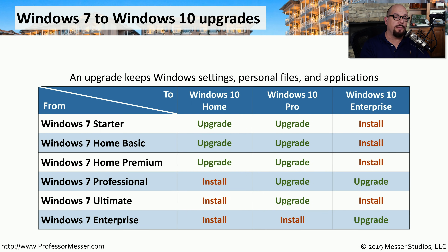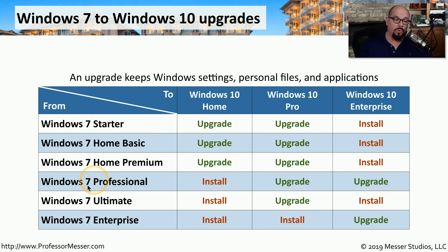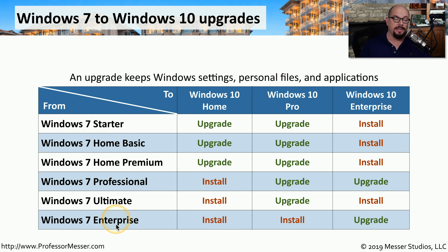There are a number of different options when upgrading from Windows 7 to Windows 10. To upgrade to Windows 10 Home, you would need to be running Windows 7 Starter, Windows 7 Home Basic, or Windows 7 Home Premium. If you want to upgrade to Windows 10 Pro, you would need to be running all of those, or Windows 7 Professional or Windows 7 Ultimate. To upgrade to Windows 10 Enterprise, you would need to be running Windows 7 Professional or Windows 7 Enterprise. If you're not running those particular combinations, you'll need to perform a clean install to move from Windows 7 to Windows 10.